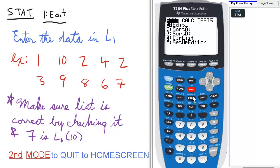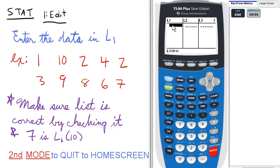To edit a list, we press STAT and 1, or ENTER, to edit. Make sure we're in L1 when we enter the data, and we'll enter this data here to the left.